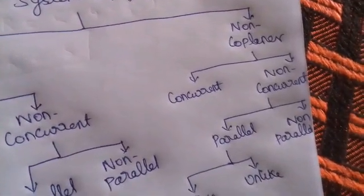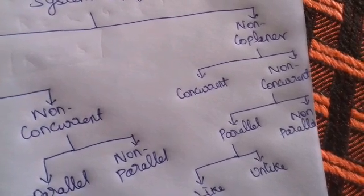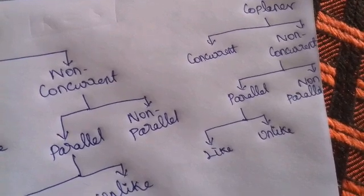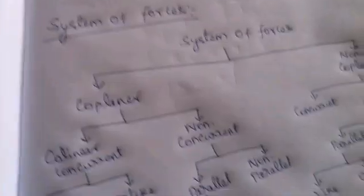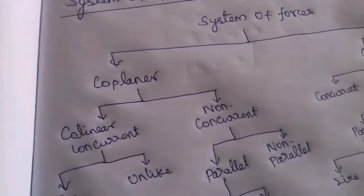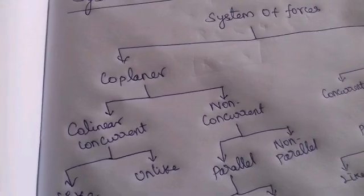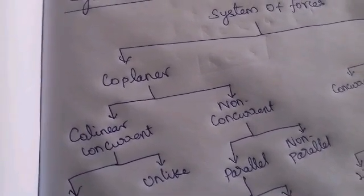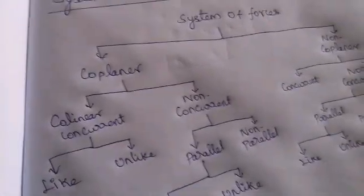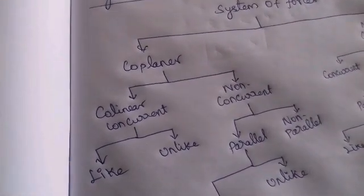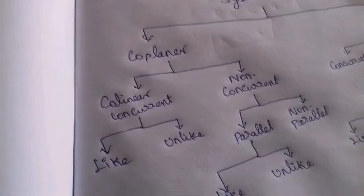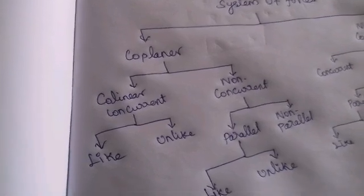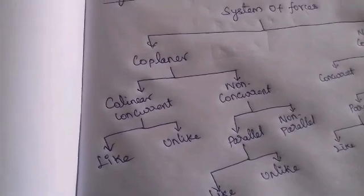Non-coplanar forces are further classified as concurrent and non-concurrent forces. Non-concurrent forces are further classified as parallel and non-parallel. Parallel forces are further classified as like and unlike forces. In a coplanar force system, all the forces act in one plane — this is also called forces in a plane. Collinear means forces which act on a common line of action are called collinear forces.